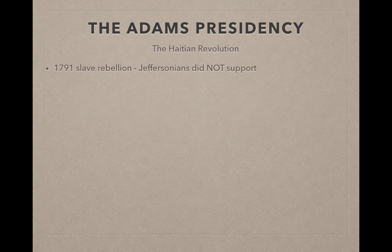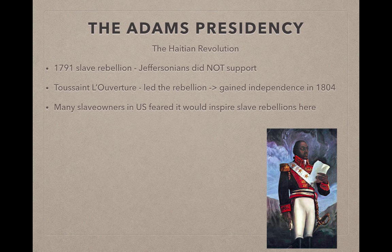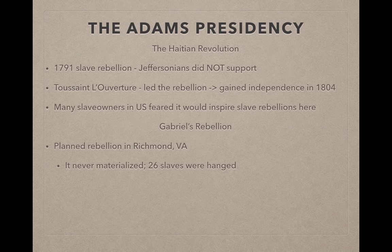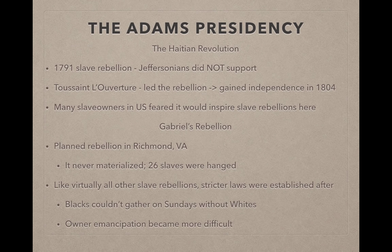There was a slave rebellion in Haiti in 1791, which the Jeffersonians did not support despite supporting the French Revolution. Toussaint L'Ouverture led the rebellion, and Haiti gained independence in 1804. Many U.S. slave owners feared this would encourage slave rebellions at home. In 1800, Gabriel's Rebellion — a planned rebellion in Virginia — never materialized, and 26 slaves were hanged. As with every other slave rebellion, stricter laws followed: for example, blacks couldn't gather on Sundays with whites in Virginia, and owner emancipation became much more difficult.